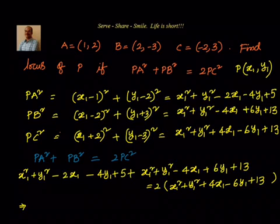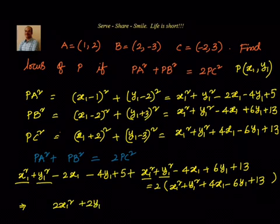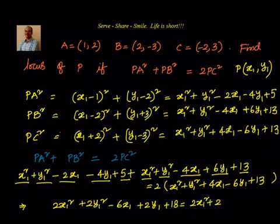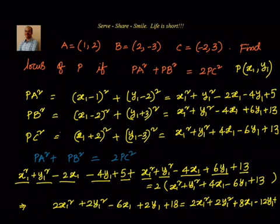Now let us simplify this. We have x1 square plus x1 square giving 2x1 square, and y1 square plus y1 square giving 2y1 square. Then looking at x terms: minus 2x1 minus 4x1 is minus 6x1. For y terms: minus 4y1 plus 6y1 is plus 2y1. And 5 plus 13 equals 18. On the right hand side, multiplying 2 into PC square gives us 2x1 square plus 2y1 square plus 8x1 minus 12y1 plus 26.